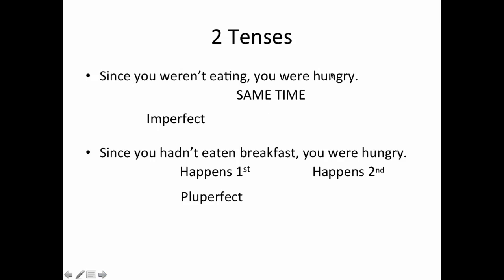The two tenses: 'Since you weren't eating, you were hungry.' Notice the 'you weren't eating' part happens at exactly the same time as the 'you were hungry' part — you're hungry and at the same time you're not eating. So for 'you weren't eating,' you're just going to use the imperfect tense, just as we do in English. The word 'were' always communicates imperfect, so this should be straightforward for you. Notice they're happening at the same time.